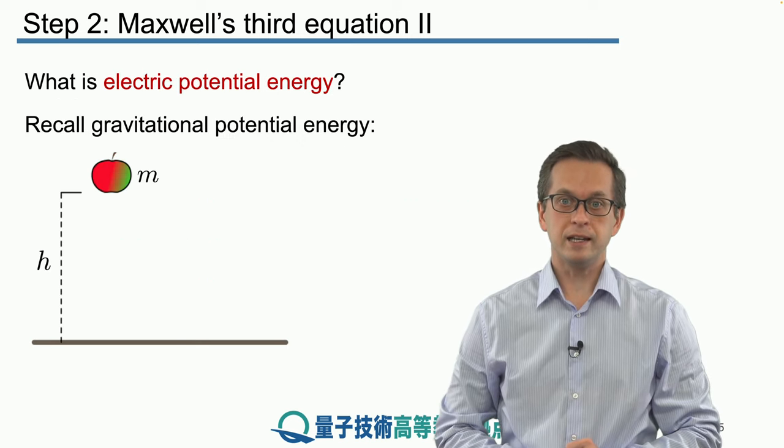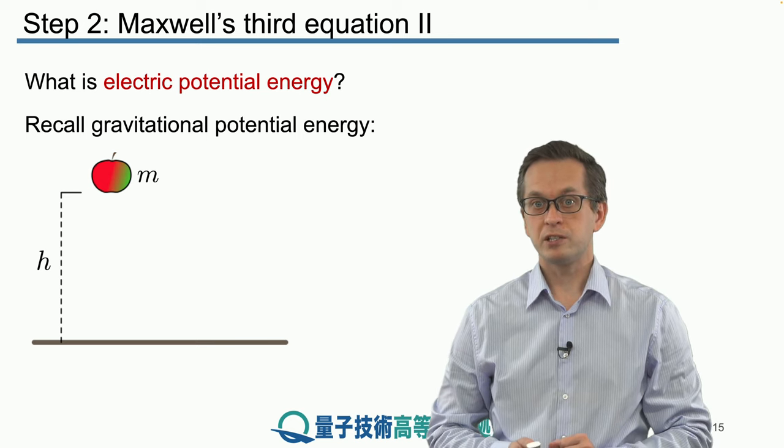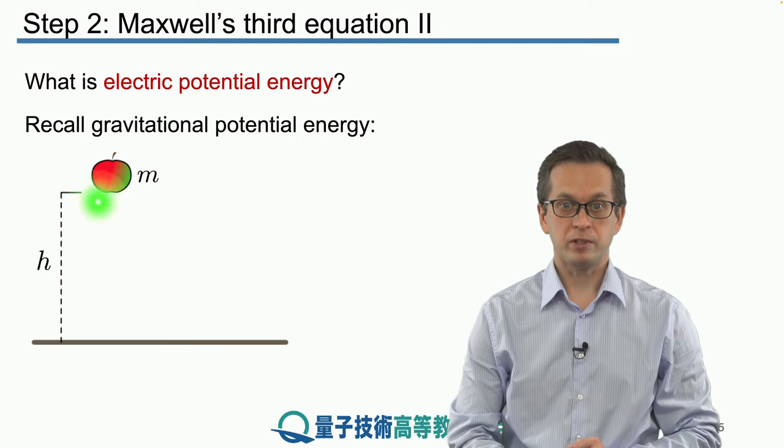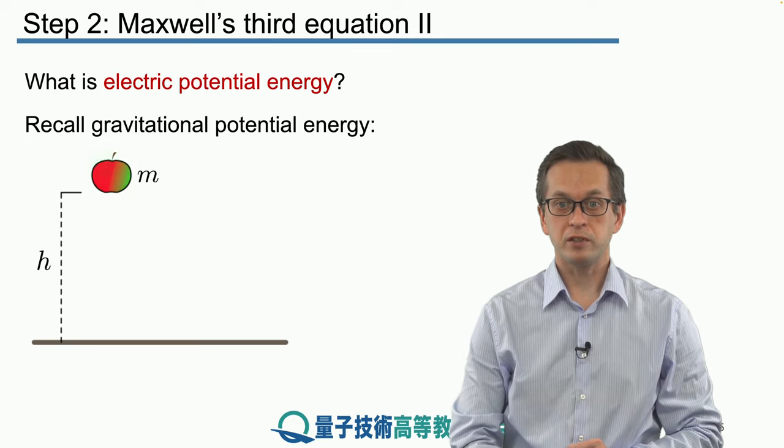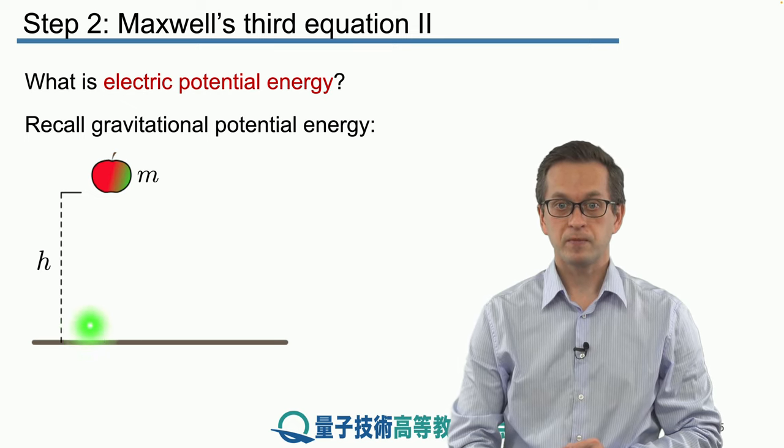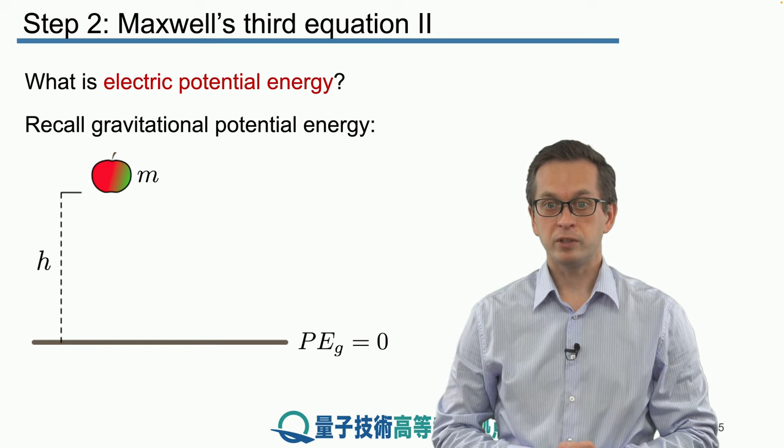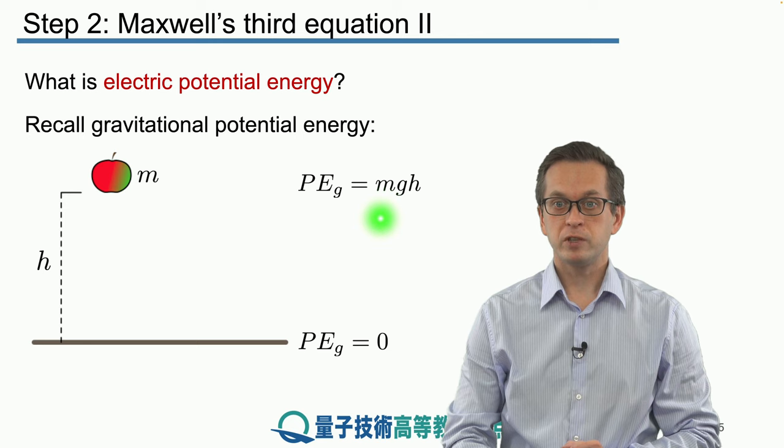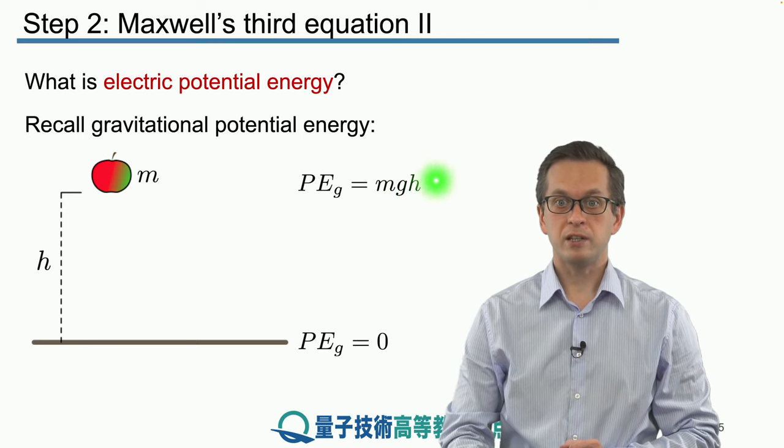What is the electric potential energy? I'm sure that you are familiar with the gravitational potential energy. If you consider some object of mass m, for example this apple, that's raised to height h above the surface of the Earth, the gravitational potential energy of that object is simply given by the mass of the object times this constant g, the acceleration due to gravity, times the height.